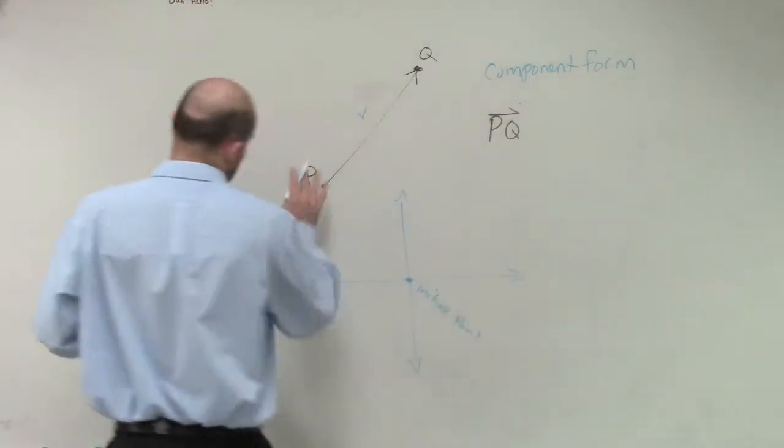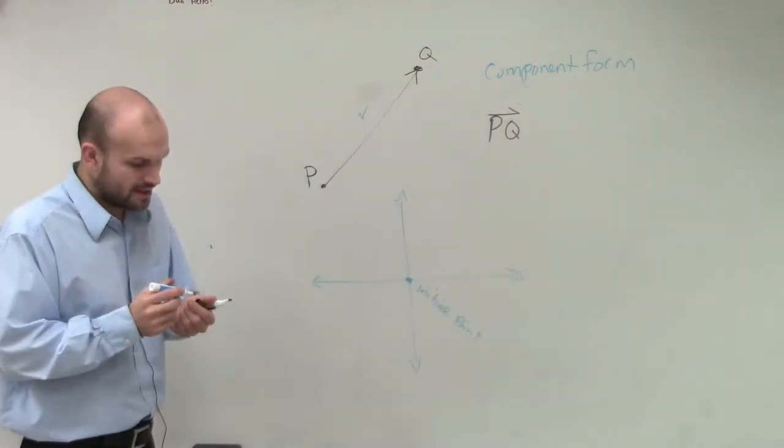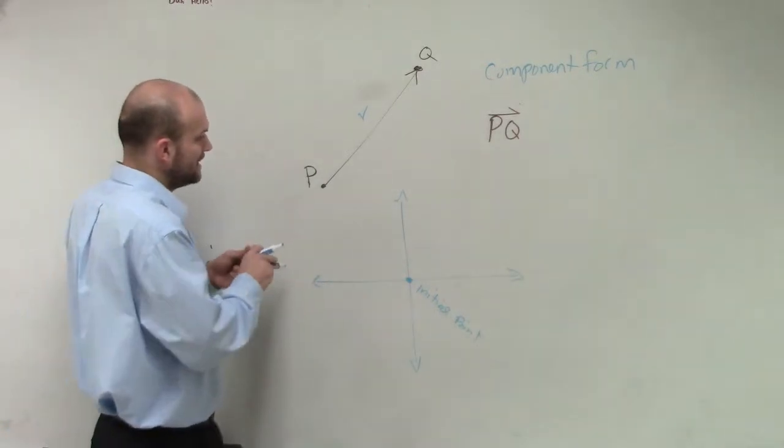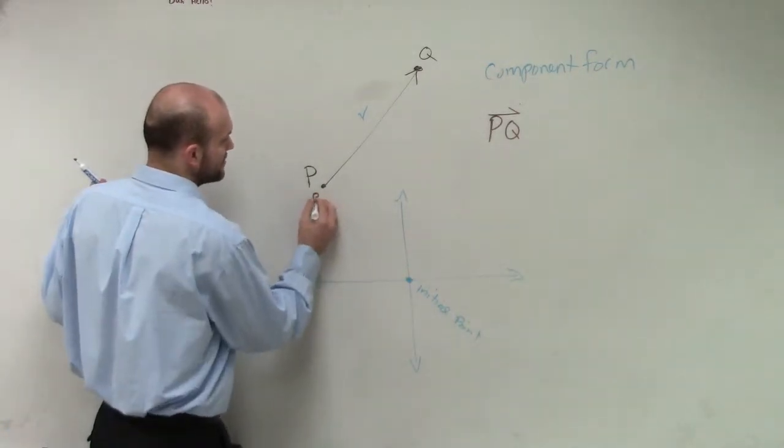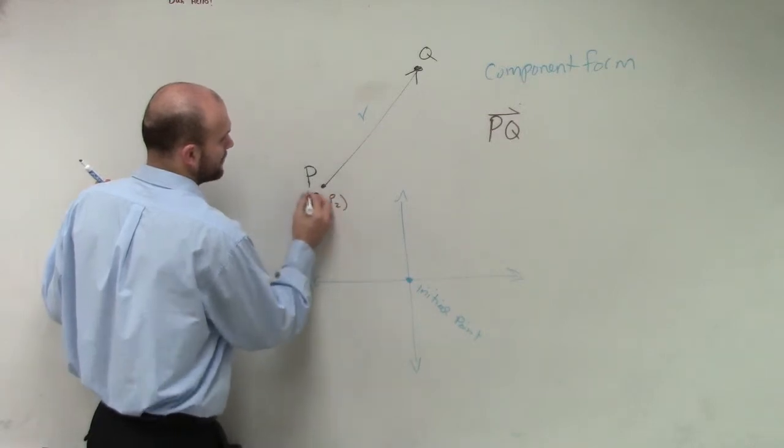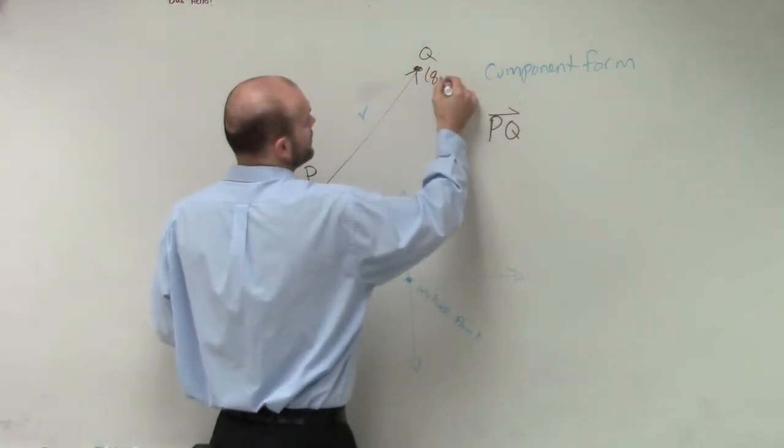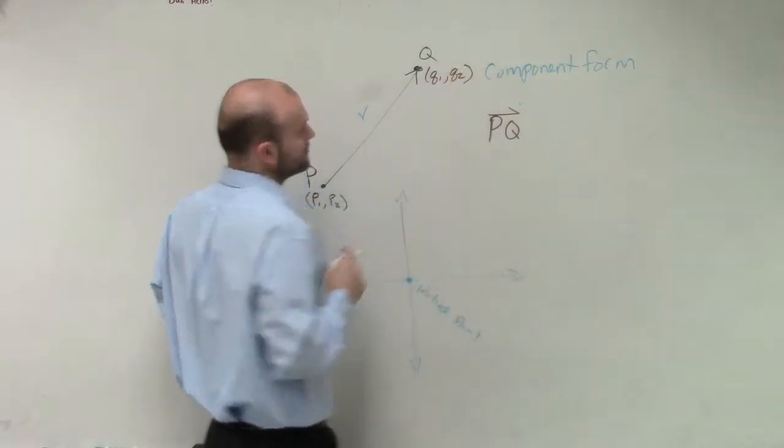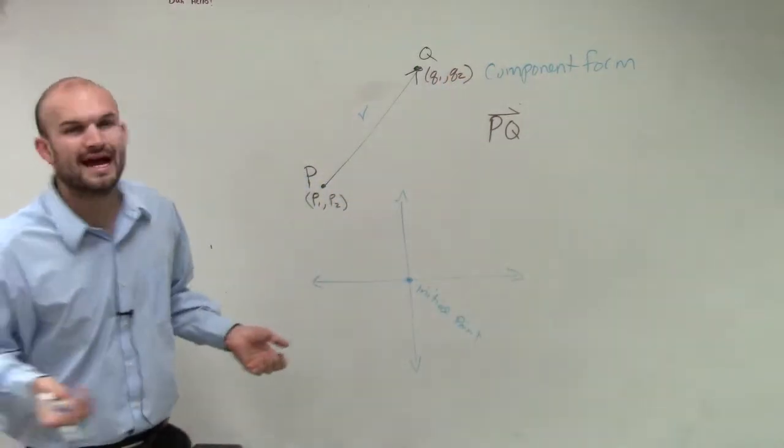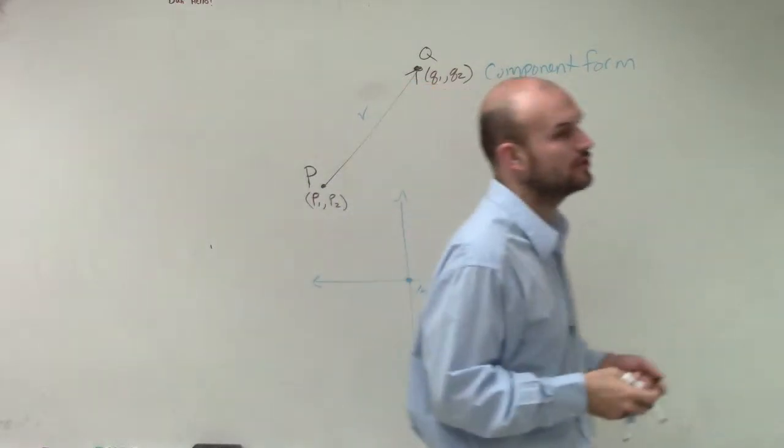So for this vector, right now, this is just on a plane, we're going to deal with, we could say that P has two coordinates, P1 and P2. Q has two coordinates, Q1 and Q2, just like your x and your y's. They're going to have two different coordinates.